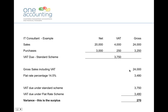Under the flat rate scheme, we look at the gross sales including VAT of £24,000. The flat rate percentage can vary between sectors, ranging between 8% and 14.5%. IT consultants, because their purchases are generally fairly low, have the highest flat rate percentage of 14.5%. So 14.5% of £24,000 is £3,480 — that's the amount of VAT they would pay over to HMRC. Comparing the two: VAT under the standard scheme is £3,750, under the flat rate scheme £3,480 — giving a surplus of £270. That is profit you can make from the VAT man by using the flat rate scheme.